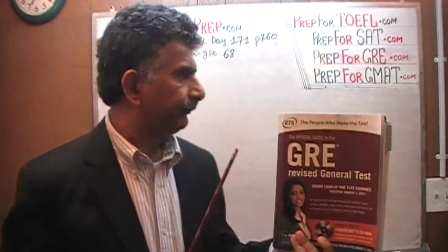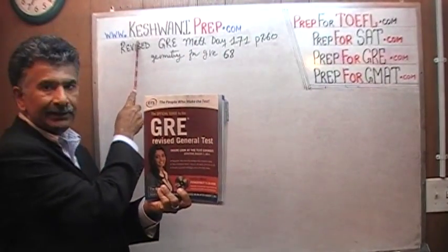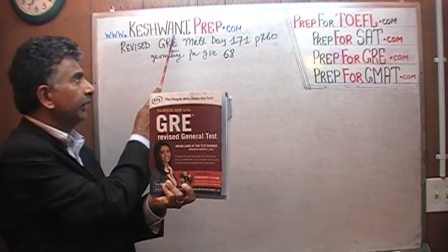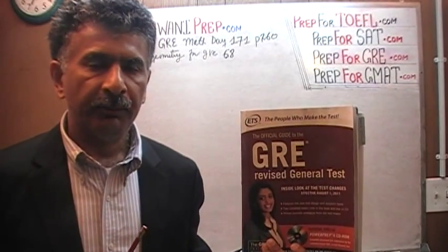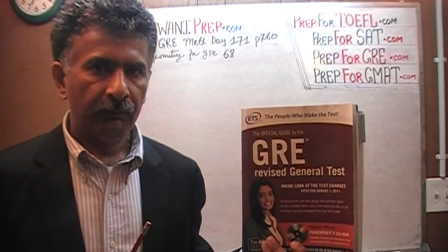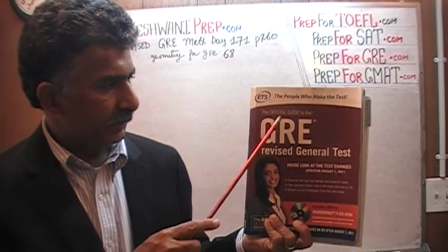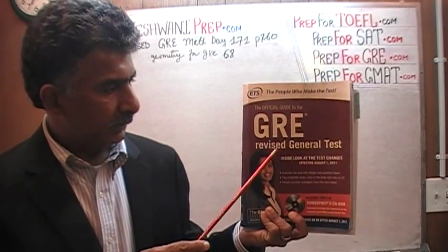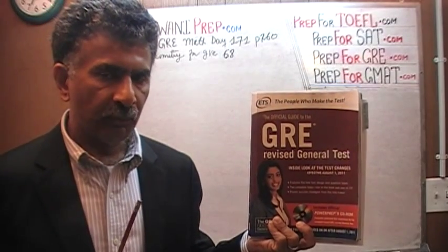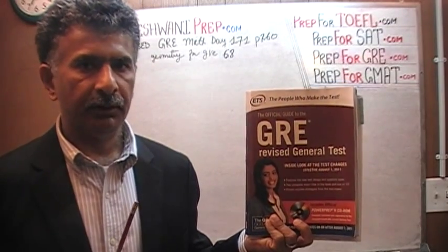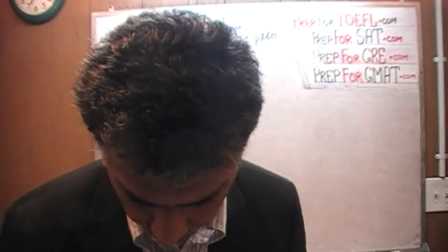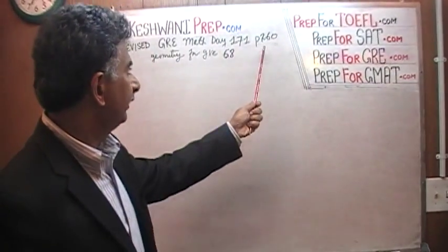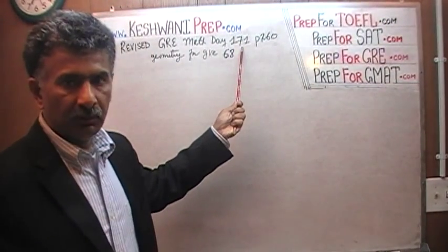Hello, my name is Keshwani — K-E-S-H-W-A-N-I. We are here because we want to prepare for the GRE. We have been solving GRE math problems out of this book, the Official Guide to the GRE Revised General Test. If you do not own this book already, purchase one immediately — you are going to need it. The problem we are about to solve is on page 216. Today is lesson number 171, and we are doing problem number 9.